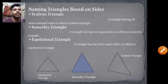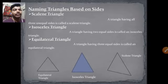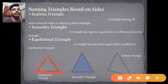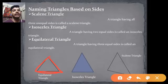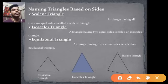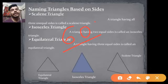Next is the equilateral triangle — a triangle having three equal sides where all sides are equal. Can you guess the angle of each angle of an equilateral triangle? It will be 60 degrees. Each angle of an equilateral triangle is 60 degrees.